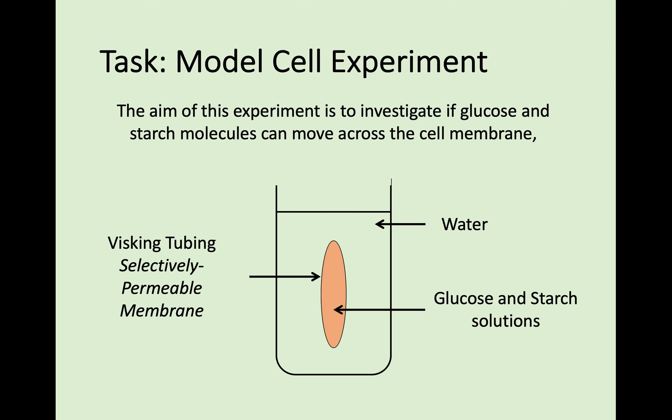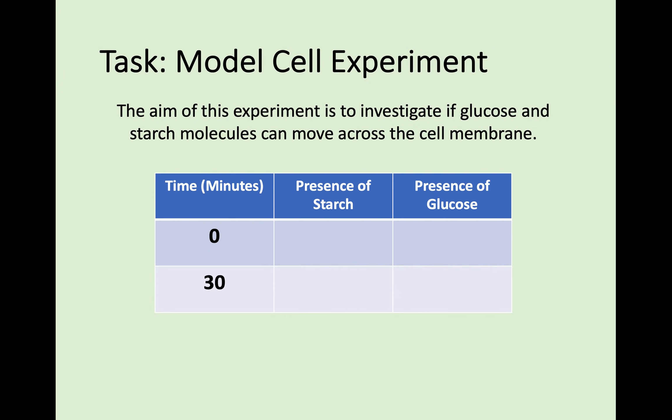A task we do in the classroom is to put a solution of glucose and starch inside visking tubing, which is a slightly permeable plastic that illustrates the cell membrane. If you place that into a beaker full of water, you can see if the glucose and starch molecules diffuse through the membrane into the water. At the start, if you test the water for starch, you'd find no starch, and also no glucose, because it's still inside the visking tubing.